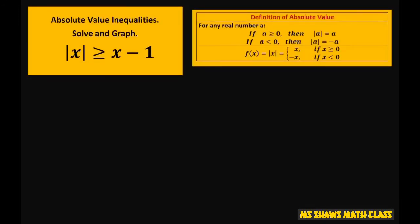The way you're going to set this up is look at our definitions. We want to set this up with a being greater than or equal to 0. If this a is positive, then you're going to write x greater than or equal to x minus 1.